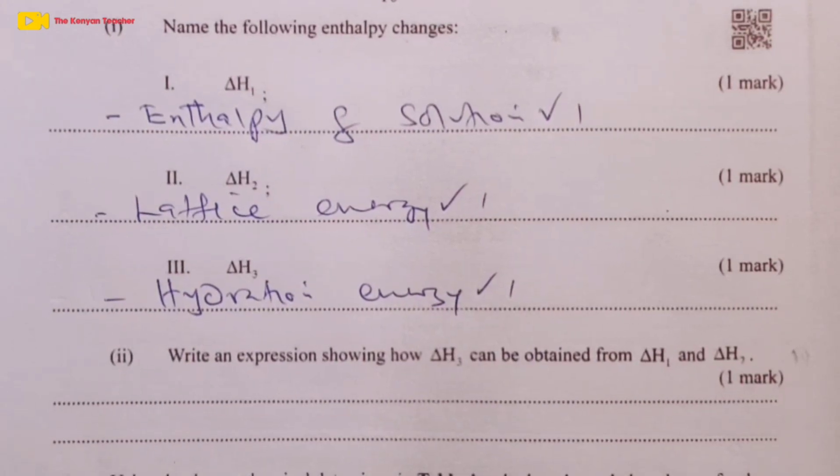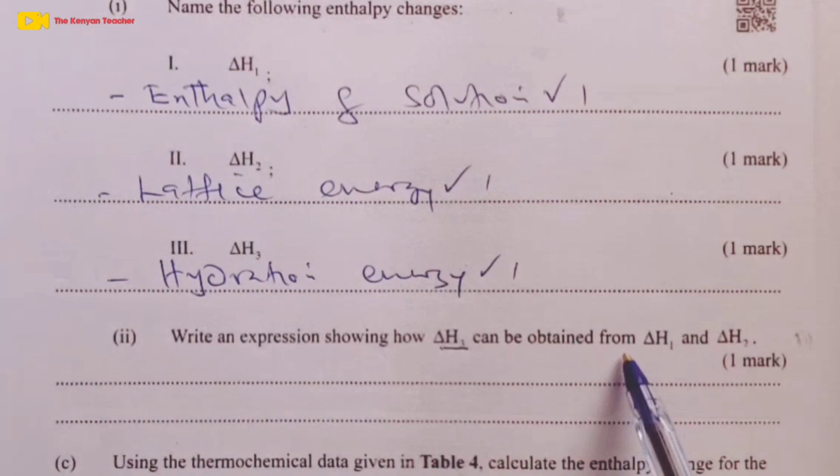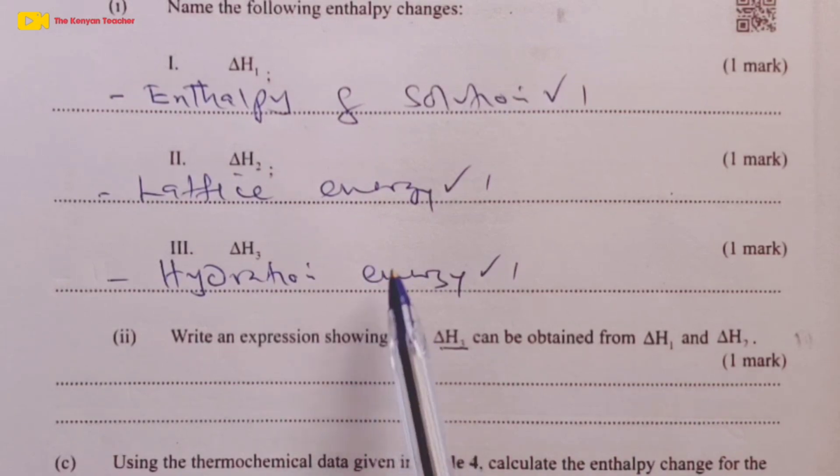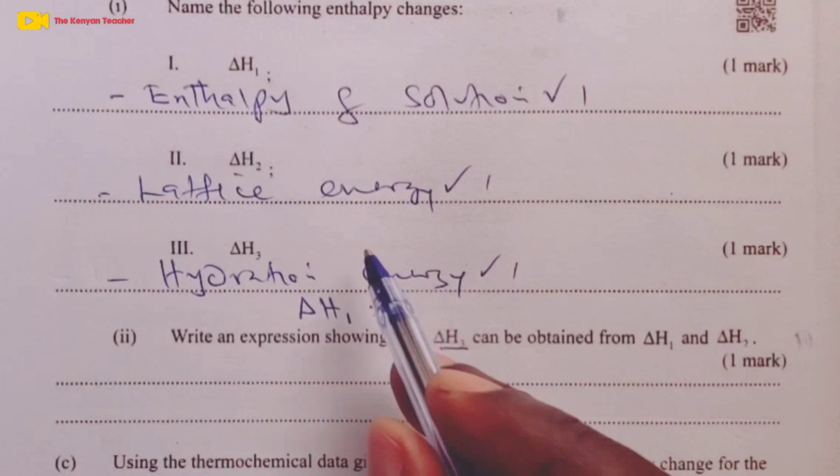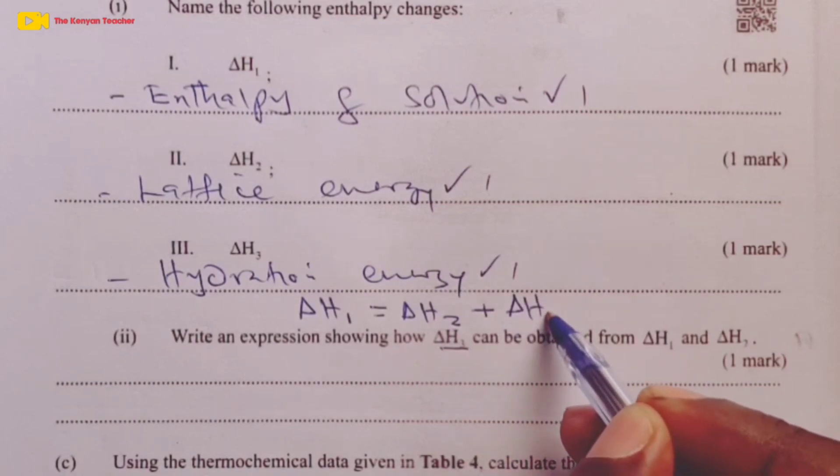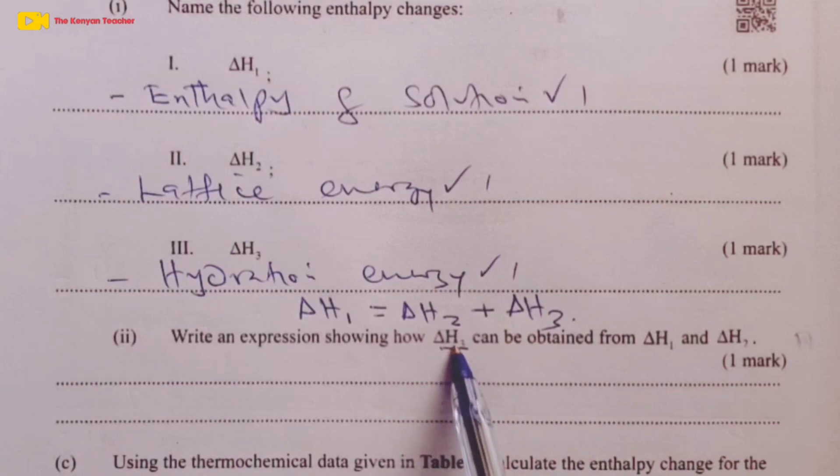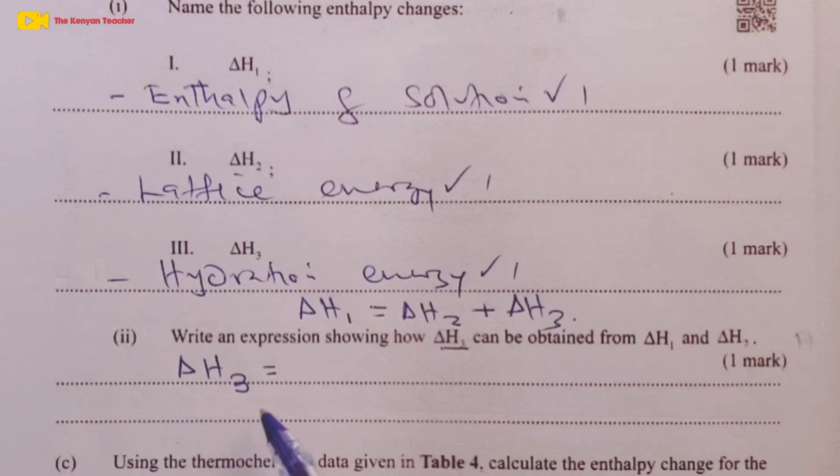For Roman 2, we were asked to write an expression showing how delta H3 can be obtained from delta H1 and delta H2. In class, we've always told you that enthalpy of solution, delta H1, is normally given by the summation of lattice energy, delta H2, added to the hydration energy, delta H3. If we make delta H3 the subject of the formula, we shall have delta H3 as being given by delta H1 minus delta H2.